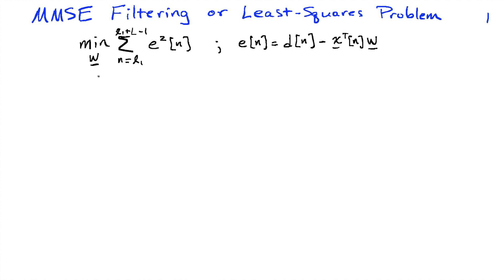Recall that the LMS algorithm was designed to find the weights in the minimum mean squared error filtering problem, or equivalently a least squares problem, where the goal is to find a set of weights W that minimizes the sum of squared errors over some range of values.